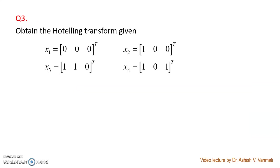The question here is to obtain the Hotelling transform given x1 is [0,0,0] transpose, x2 is [1,0,0] transpose, x3 is [1,1,0] transpose, and x4 is [1,0,1] transpose. One should remember the Hotelling transform is nothing but the KL transform. In the previous two problems I gave complete detailed steps; in this problem I will give only the key answers, and students should carry out all the steps and verify.